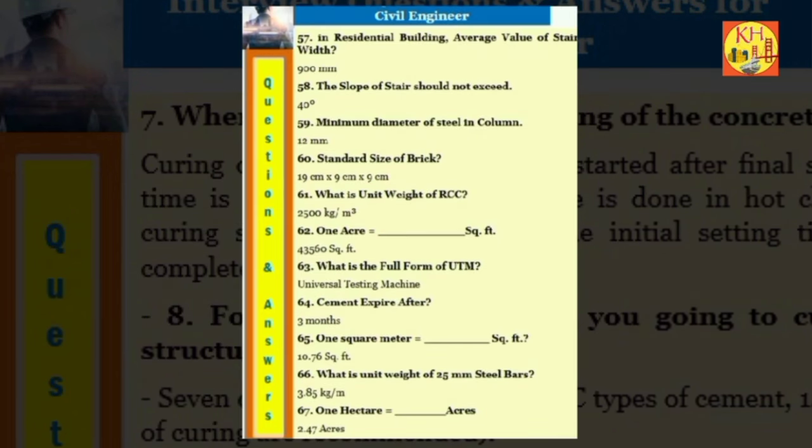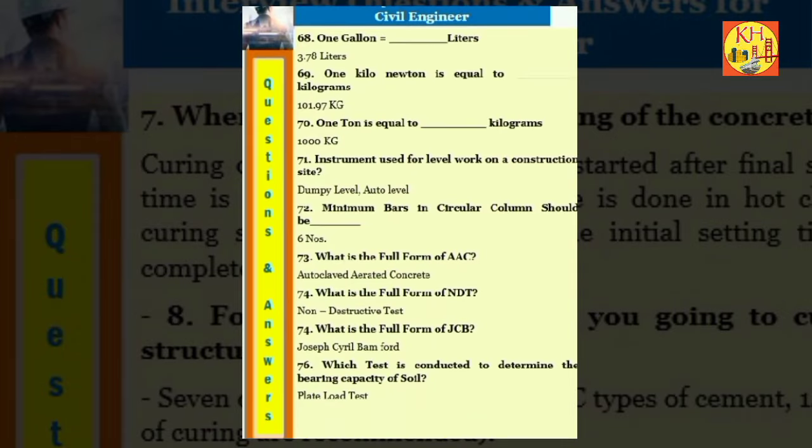Question 67: 1 hectare equals 2.47 acres. Question 68: 1 gallon equals 3.78 liters. Question 69: 1 kilo newton is equal to 101.97 kg. Question 70: 1 ton is equal to 1,000 kg. Question 71: Instrument used for level work on a construction site: Dumpy level, Auto level. Question 72: Minimum bars in circular column should be 6 numbers. Question 73: What is the full form of AAC? Autoclaved aerated concrete. Question 74: What is the full form of NDT? Non destructive test. Question 75: What is the full form of JCB? Joseph Cyril Bamford.